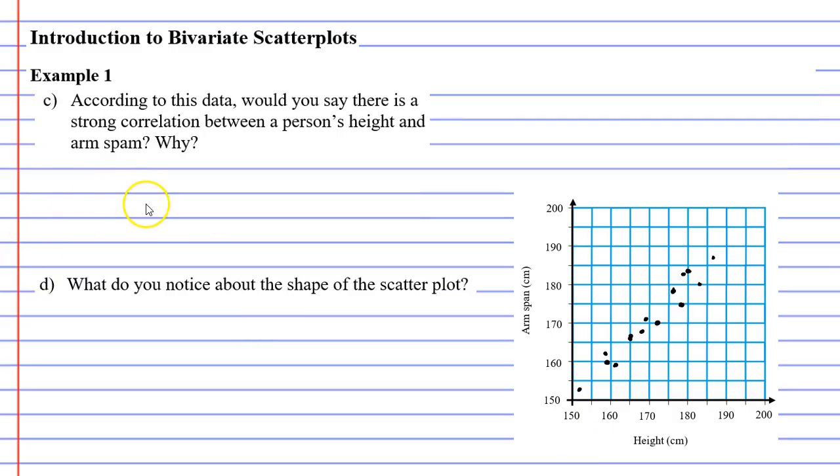So we've also got questions C and D to go. It says, according to this data, would you say there is a strong correlation between a person's height and arm span? Why? And all we need to do is look at our points and see if there's some sort of a trend going on here. And there is one. The trend we notice is that as your height increases, your arm span increases as well.